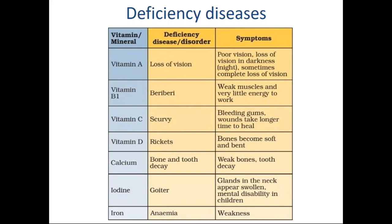When we have a lack of vitamin B1, the disease is called beriberi. The main symptoms are weak muscles and very little energy. Deficiency of vitamin C causes scurvy, where we observe bleeding gums and wounds that take longer to heal. During deficiency of vitamin D, rickets is formed — characterized by soft bones that can bend, commonly affecting teenagers and children. Calcium is also related to vitamin D, since vitamin D causes the body to absorb calcium. Without enough calcium, rickets develops along with weak bones and tooth decay.